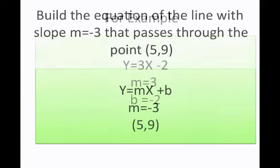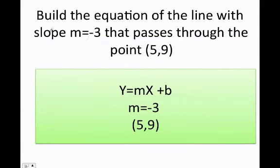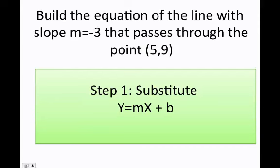Let's do a couple of examples to understand this better. Build the equation of the line with slope m equals negative 3 that passes through the point 5, 9. Well, here we have the slope which equals negative 3. We also have one value for x and one value for y. Now I don't have b, so the first thing I'm going to do is find the value of b. I'm going to substitute what I have. I have the slope, so I replace m with negative 3, x equals 5, y equals 9, and bingo. Now I can figure out who is b.